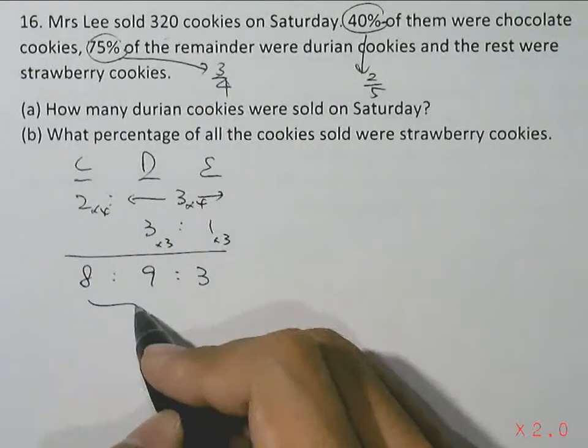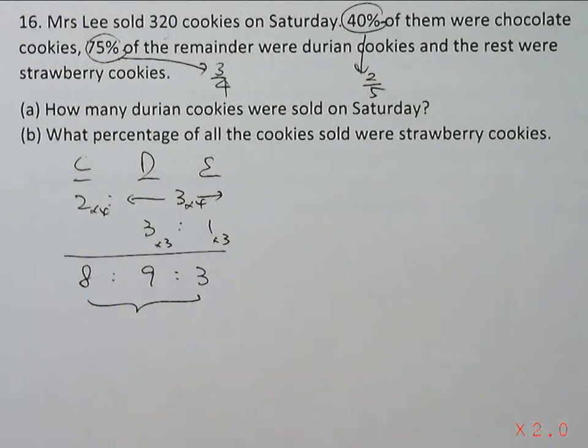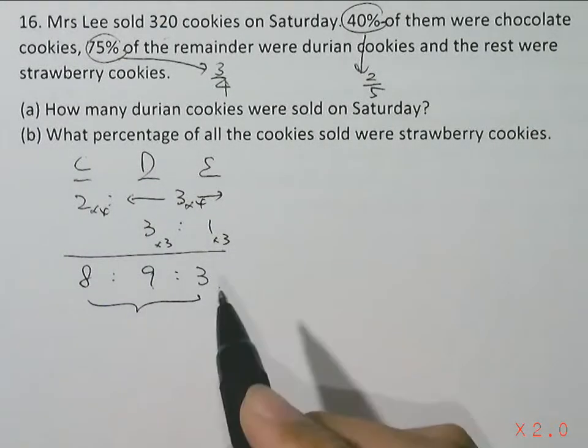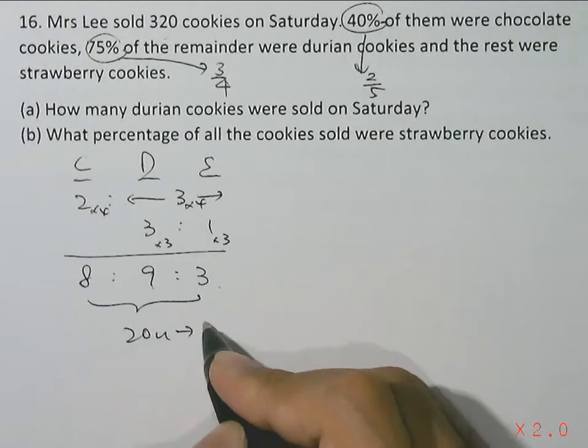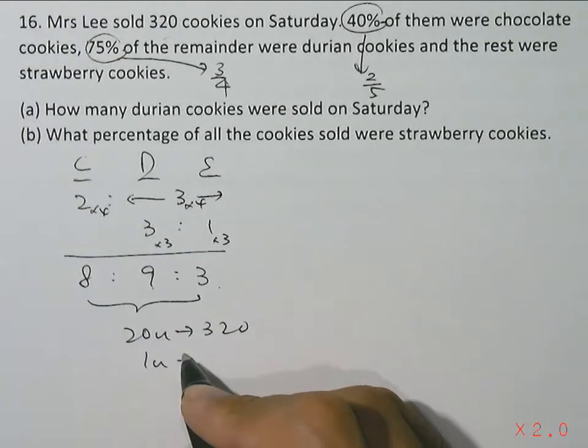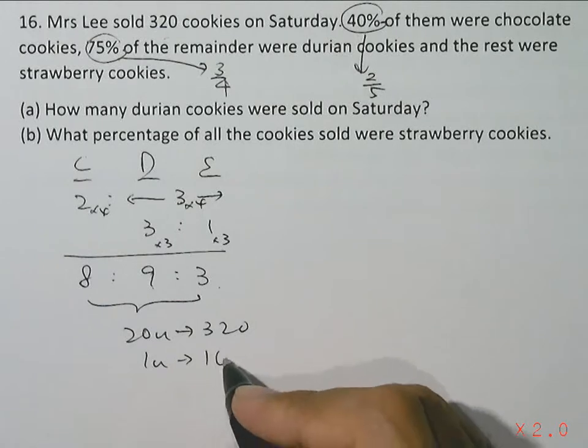So we know that a total of 320 cookies were sold. That's 8 units, 9 units, 3 units, which adds up to a total of 20 units to be the 320. So one unit is 320 dividing by 20, giving us 16.